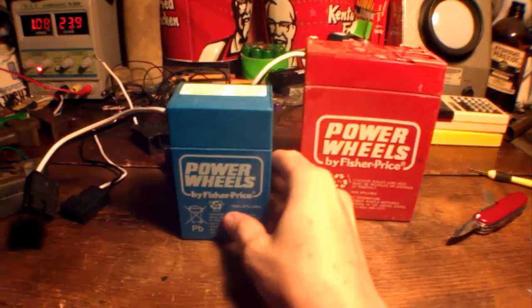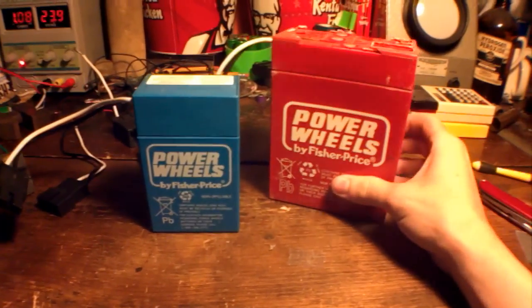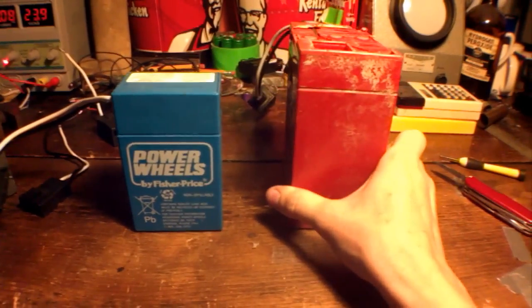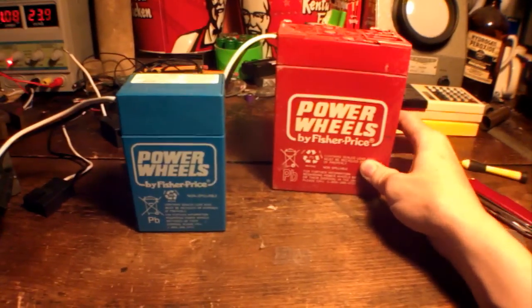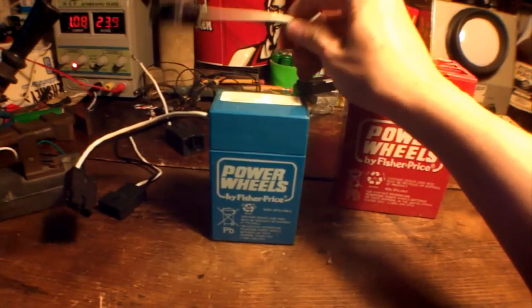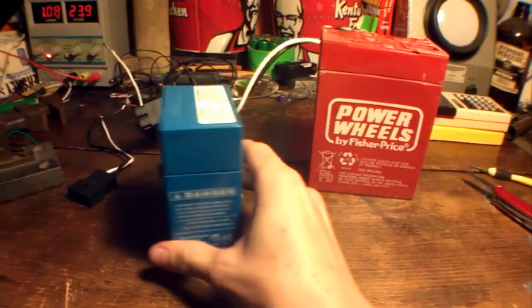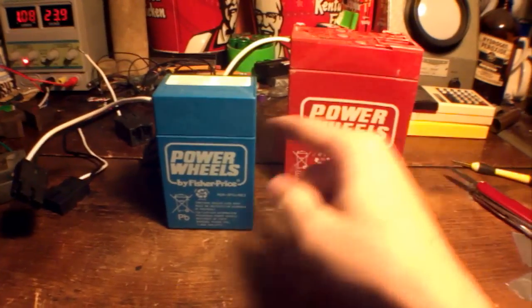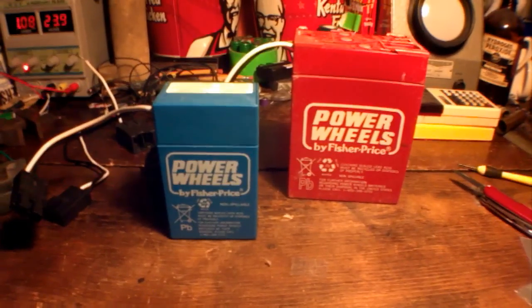Here's the four amp hour battery right next to its nine amp hour cousin. I really like these batteries because they're nice and compact and they have the cables coming out of them. They're really nice colors too, red and blue. All I need to get next is purple, yellow and green, and then I'll be happy.